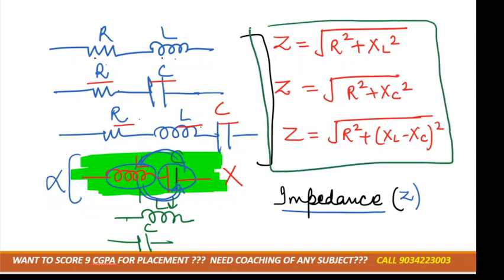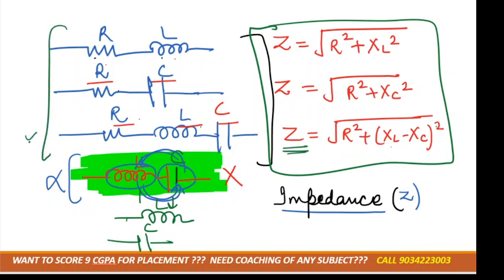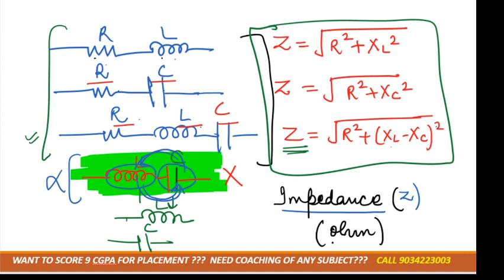Note that if XL is positive we use XL − XC, and if XC is positive we use XC − XL, but since it is squared we get the same value either way. Impedance is a form of opposition to current, so its unit is ohms.